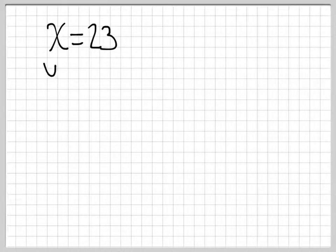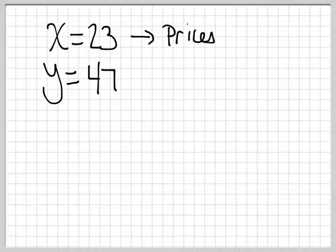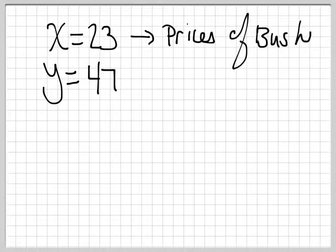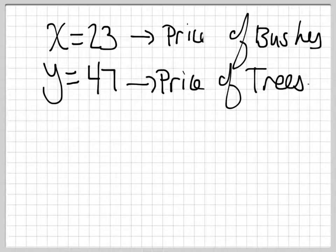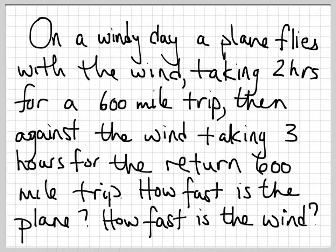So we just got x was 23, y was 47. And this was the price of bushes and this was the price of trees. So that's one problem. Let's look at the next one.